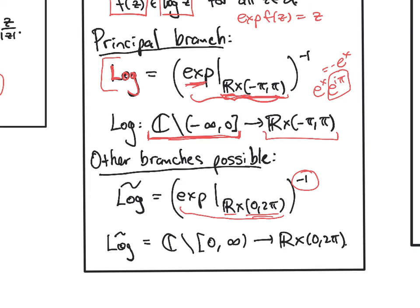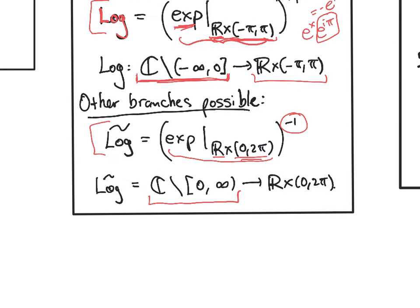I'm just writing that as log tilde temporarily. There's not a standard name for this branch of the log. But here we're missing points with argument zero, and we're also missing zero in the domain. So we get the complex numbers minus the non-negative real numbers, and this will map onto this strip.